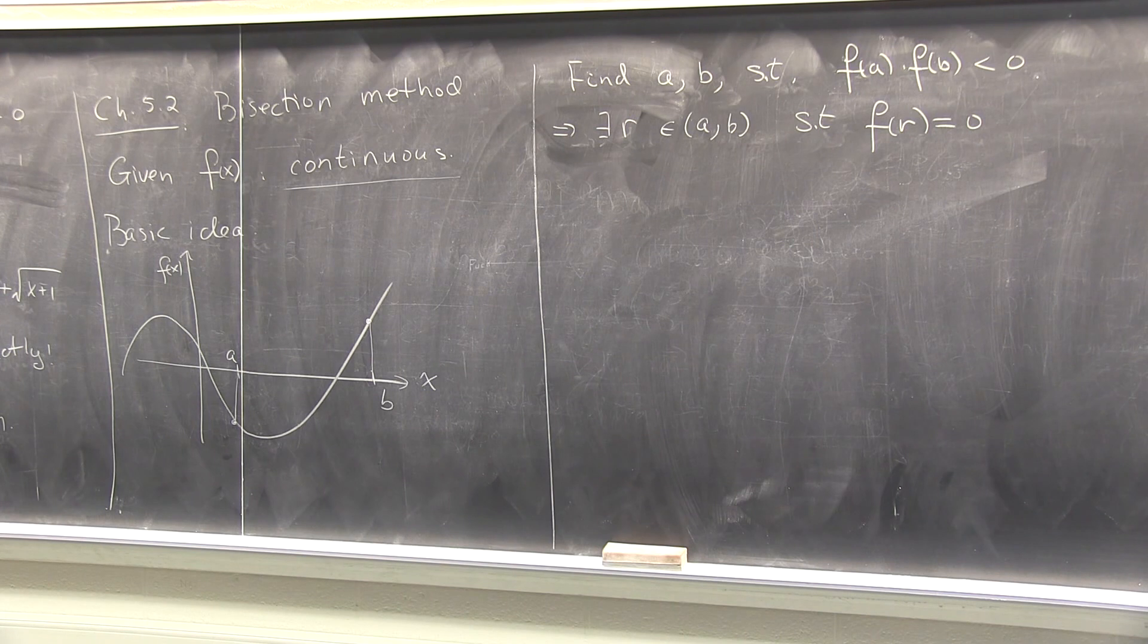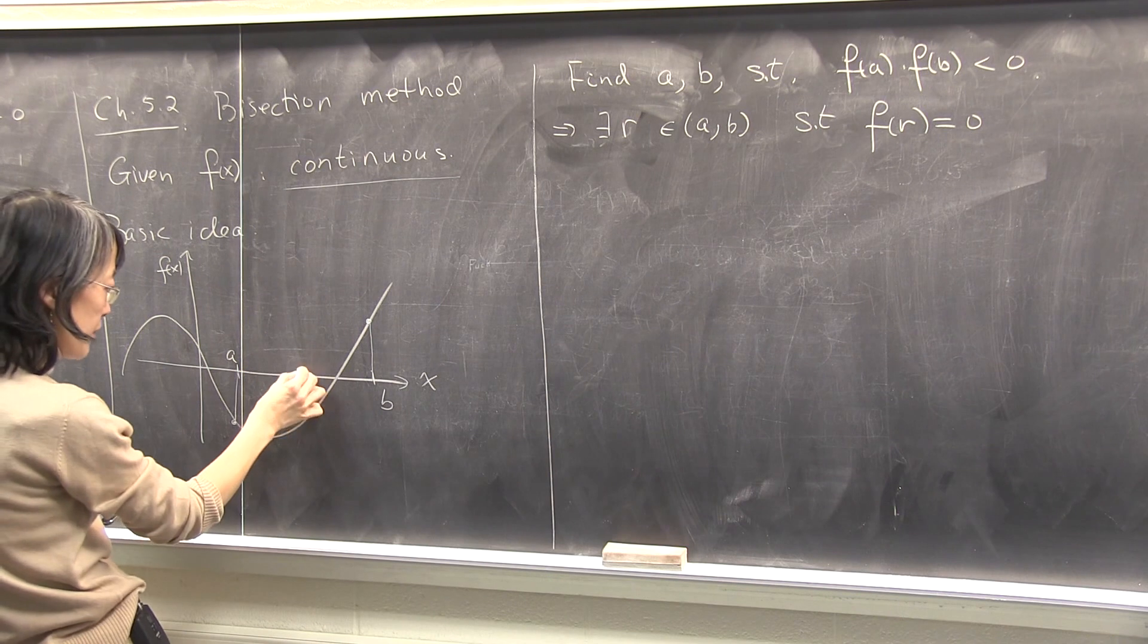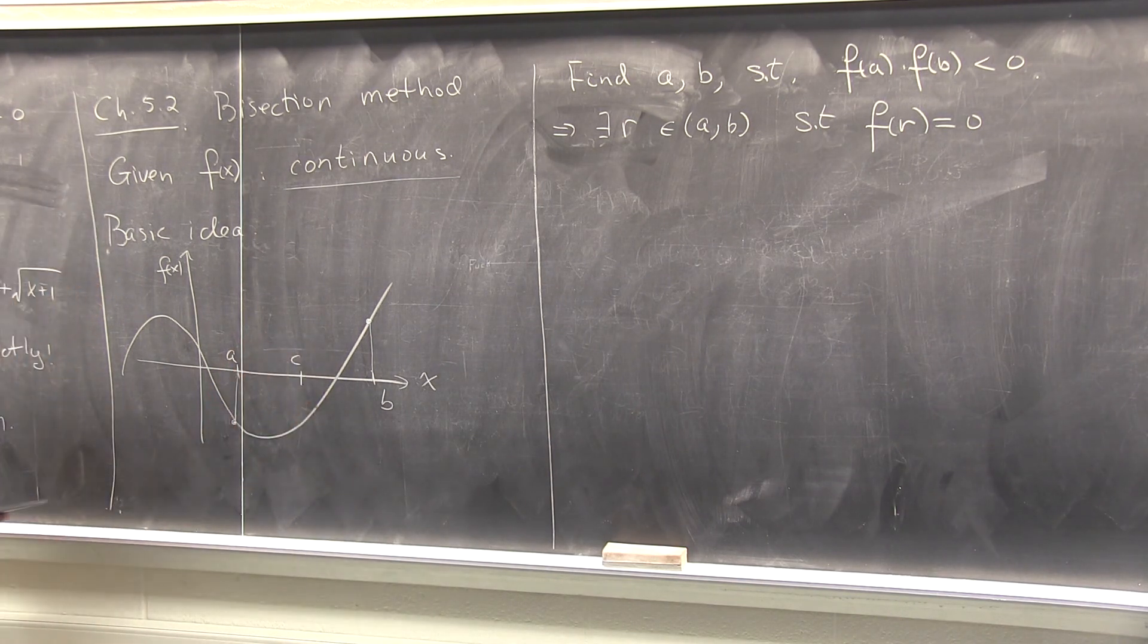So this interval from a to b might be pretty big, and this claim is nothing, because you might be pretty far away from the roots. I want a good approximation. So now what I do, I bisect it, I cut this interval exactly into half, I find the midpoint c. Is that clear?